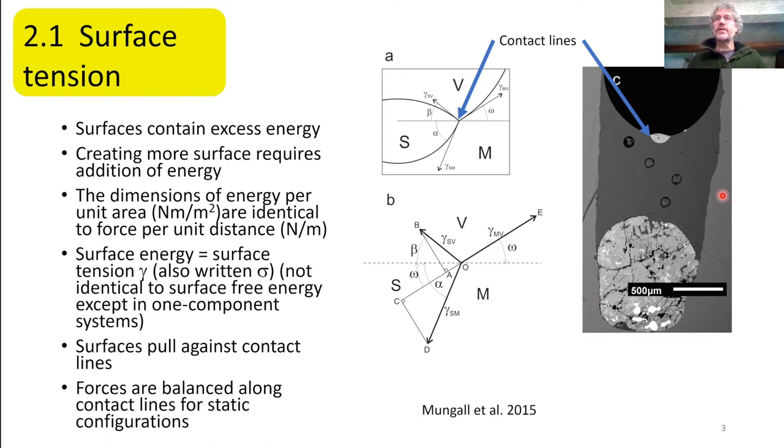And where you have multiple phases coexisting, like here where there's a sulfide drop, vapor phase, and silicate melt, where those three surfaces meet, there's a line, and that's called a contact line. And if the system is going to be at rest, those tensions pulling perpendicular to that contact line have to cancel each other out, otherwise that contact line will move. So I won't go into the details, but because of that fact, you can actually predict the forms that compound drops will take in a static situation. This force balance always has to be met. So if you know the surface tensions, you can easily predict the shapes of compound drops.